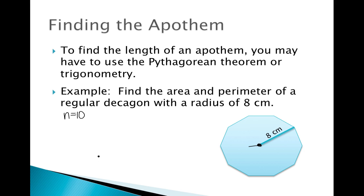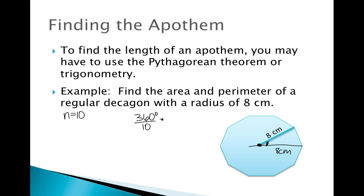To figure out the area, the first thing we can do is draw an isosceles triangle inside the polygon. Since this is a regular polygon, every triangle drawn to each endpoint will have the same angle measure at the center. Specifically, that angle measure is 360 degrees divided by the number of sides, which is ten, so that angle measure is 36 degrees.